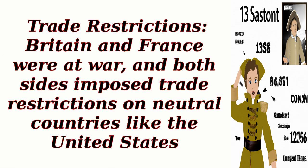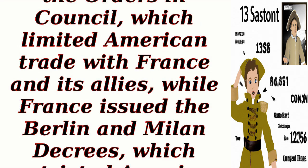Trade restrictions: Britain and France were at war, and both sides imposed trade restrictions on neutral countries like the United States. The British imposed the Orders in Council, which limited American trade with France and its allies, while France issued the Berlin and Milan decrees, which restricted American trade with Britain.